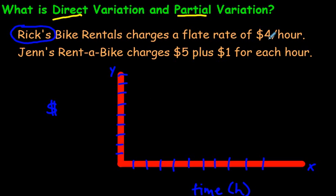Now, $4 per hour. That means before you have driven at all, it's going to be $0 for Rick's bike rentals. I'm going to put a dot right there. This is sometimes called the origin. Now after 1 hour, there's 1 hour, it's going to cost you $4. So 1, 2, 3, 4. There's $4. And that's 1 hour. After 1 hour, you're paying Rick's bike rentals $4.